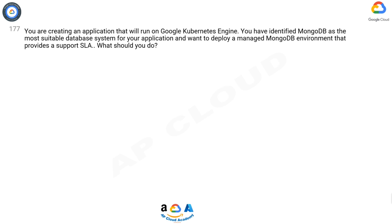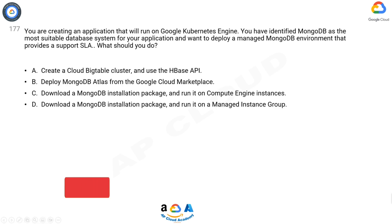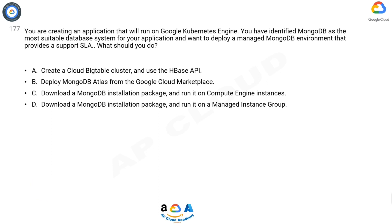Question 177: You are creating an application that will run on Google Kubernetes Engine. You have identified MongoDB as the most suitable database system for your application and want to deploy a managed MongoDB environment that provides a support SLA. What should you do? A: Create a Cloud Bigtable cluster and use the HBase API. B: Deploy MongoDB Atlas from the Google Cloud Marketplace. C: Download a MongoDB installation package and run it on Compute Engine instances. D: Download a MongoDB installation package and run it on a managed instance group.